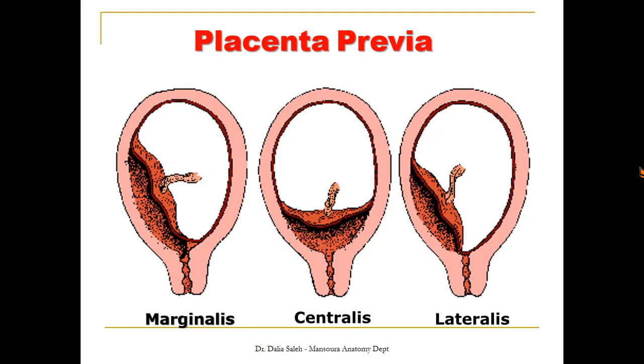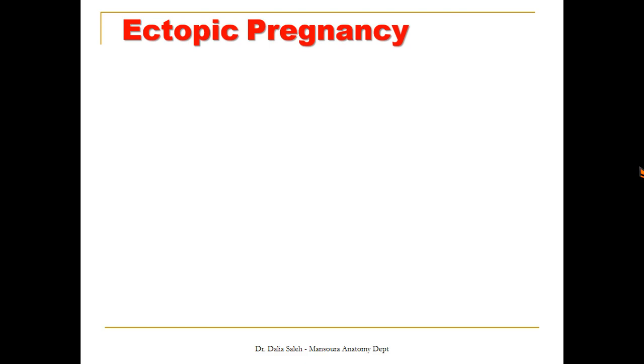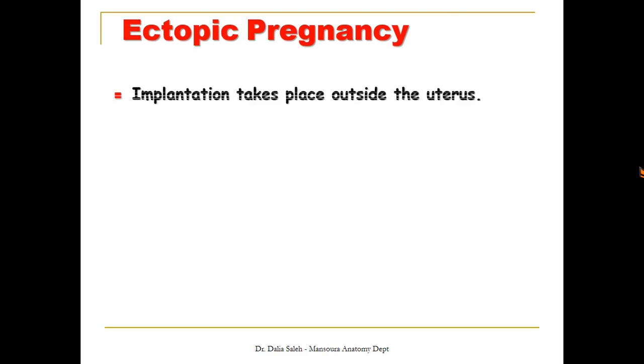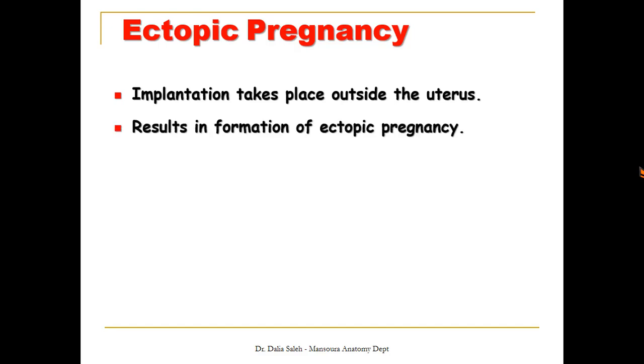Abnormal implantation can occur inside the uterus but not in the usual place. If implantation occurs at the lower segment of the uterus, we call it placenta previa. This can appear as placenta previa lateralis, where the placenta lies at the lateral sides of the internal os of the cervical canal, or placenta previa marginalis, where the placenta covers the margin of the internal os. If implantation takes place outside the uterus, we call it ectopic pregnancy.